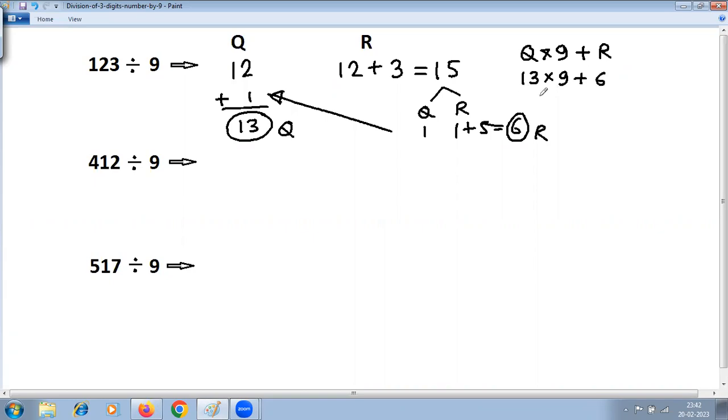13 into 9 is 117 plus 6. 117 plus 6 is 123. Like this, you can check on calculator whether the answer is correct.